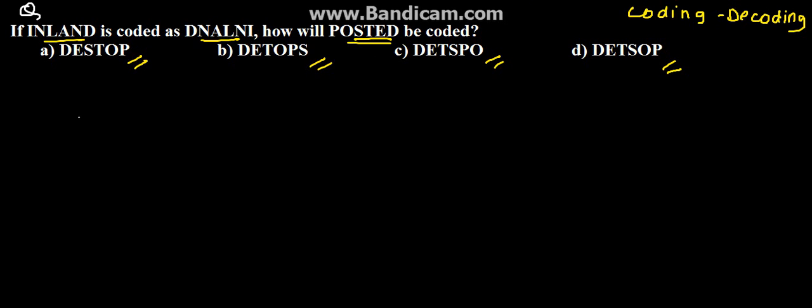So first we will see how INLAND is coded. I-N-L-A-N-D. And we have D-N-A-L-N-I. So here if we number them as 1, 2, 3, 4, 5, 6.